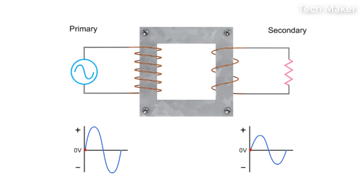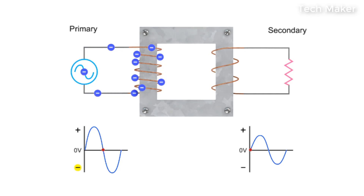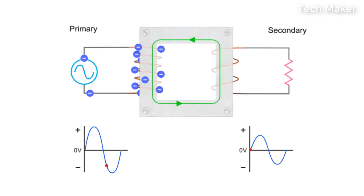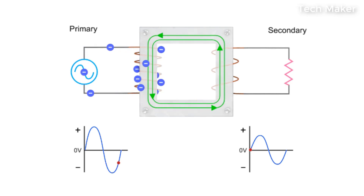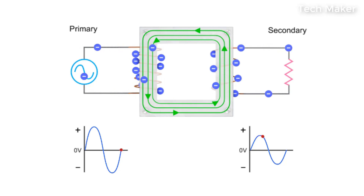The constantly changing current driven by an alternating voltage source induces a changing magnetic field in the core of the transformer. The magnetic field created by the alternating current in the primary coil generates the flux in the transformer core. The secondary coil converts the flux back into current flow and produces a voltage at the load or resistance in the secondary circuit.